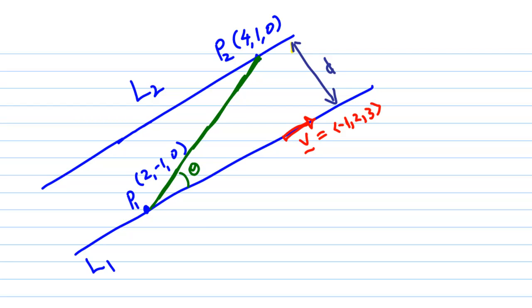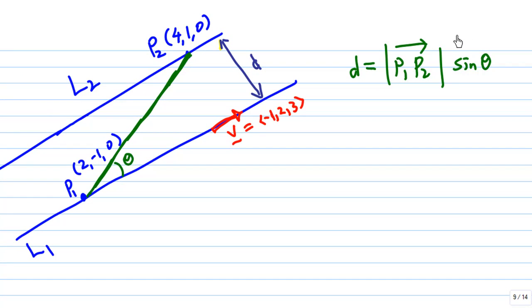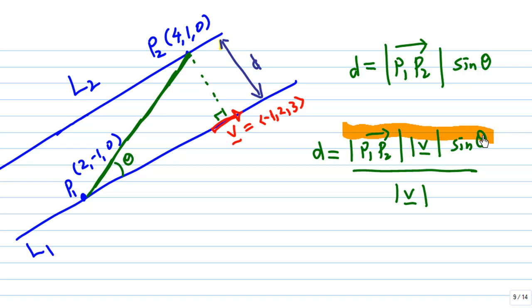Then the distance from the diagram, you can know that this distance is the length of P1P2 times sine theta. So I can actually get rid of theta by doing this: I'm going to multiply by the length of V and then divide by the length of V again. Now, the reason I do this is because the expression on the numerator is very special.